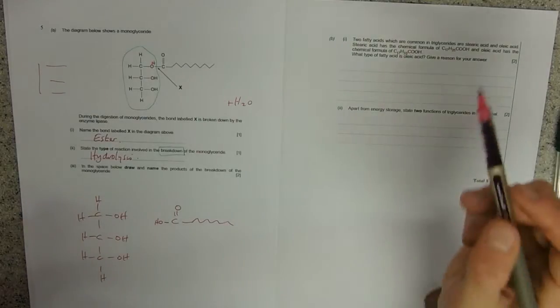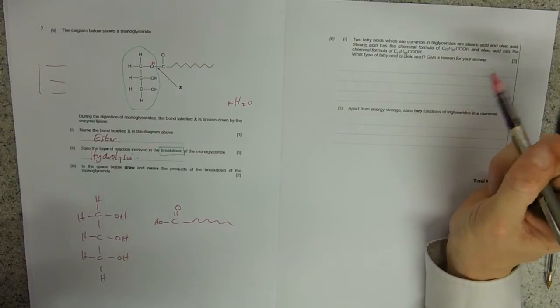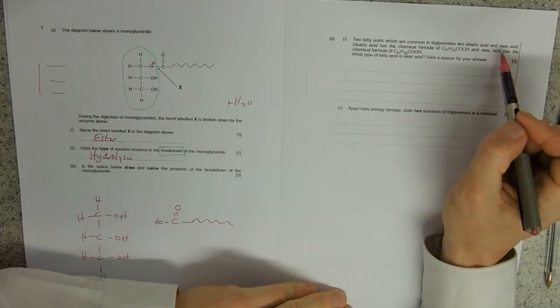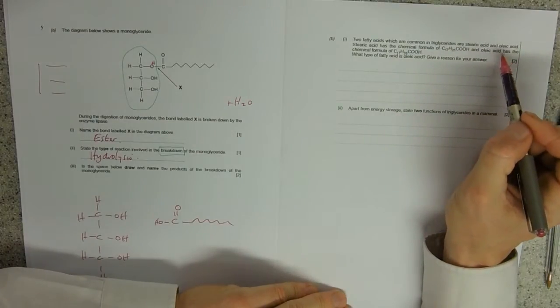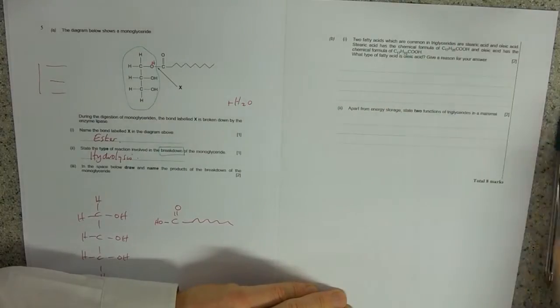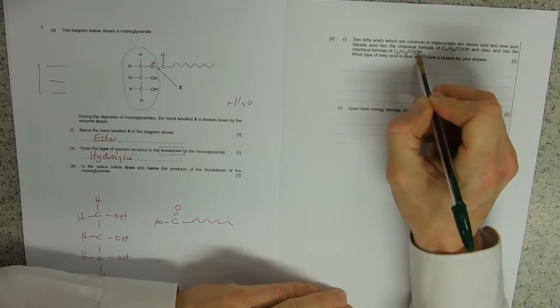B1 is giving us two fatty acids: stearic acid and oleic acid. Don't worry if you've not heard of either of them. It gives you chemical formulas for two, so we can see that Q group there is similar to what makes it an acid.